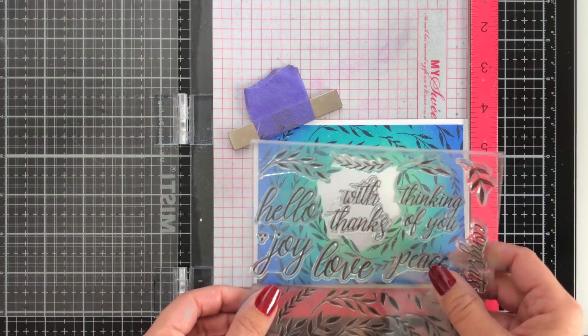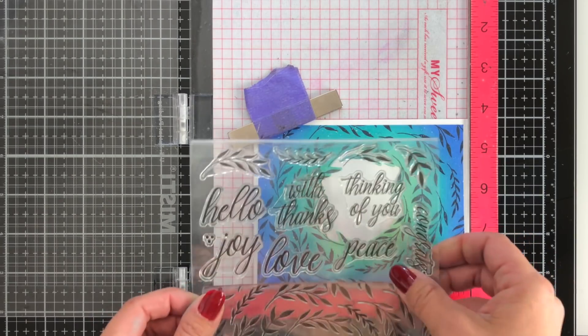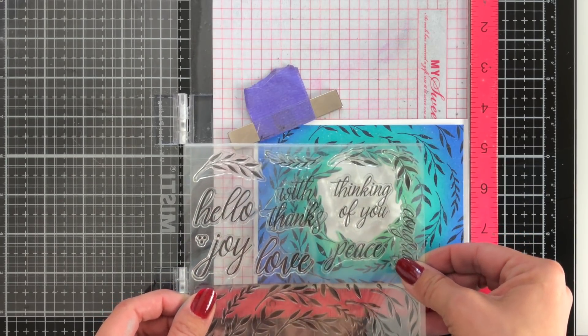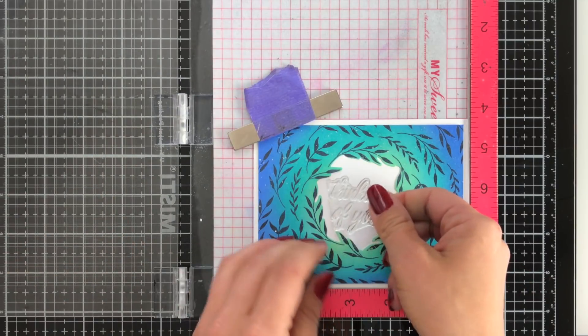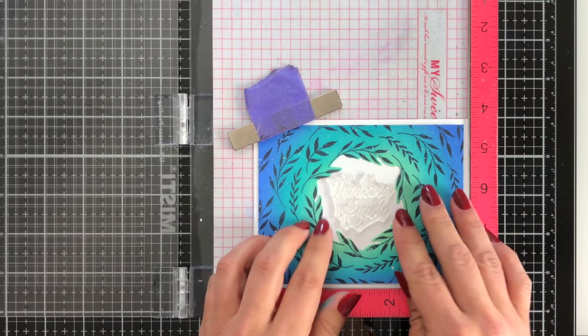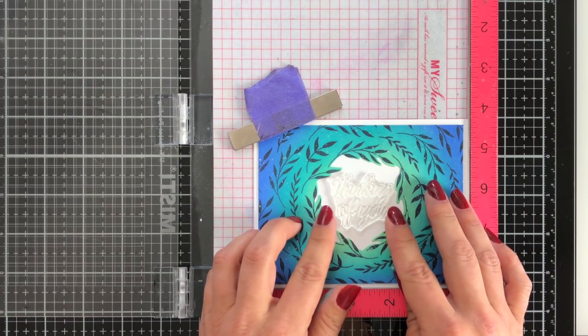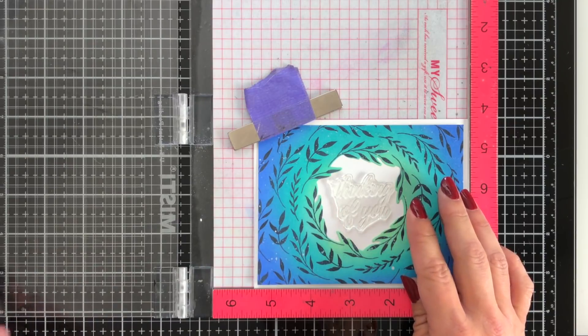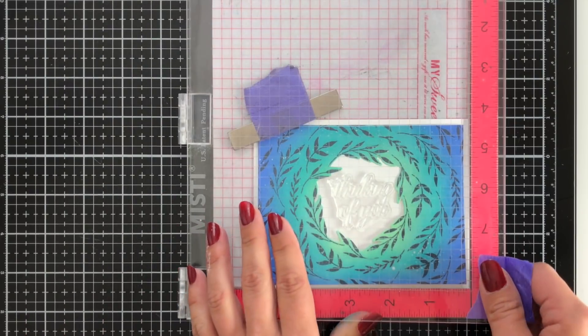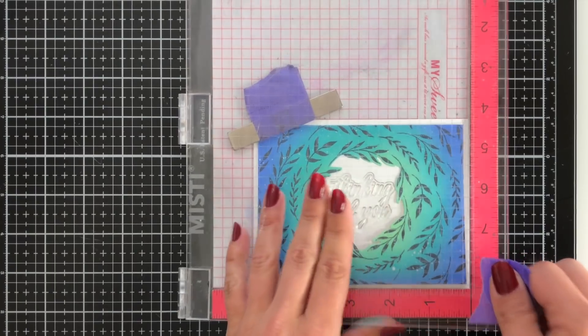I want to add now a sentiment to the middle. So I'm using my MISTI tool to line up. I have an A2 size white card base, so four and a quarter by five and a half. I had trimmed down my ink blended panel to four by five and a quarter and lined that up in the MISTI, holding it in place with a magnet. That way I can line my sentiment up perfectly in the middle. I know what's going to fit.